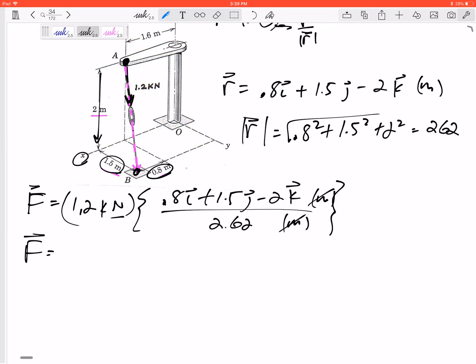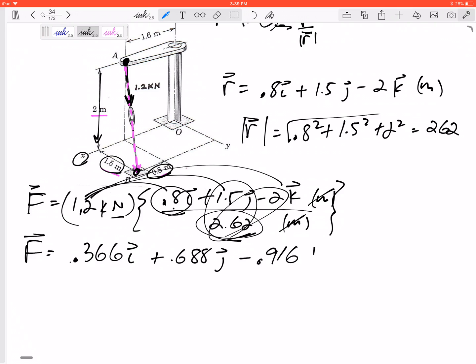So here this force would be 1.2 times 0.8 over 2.62, which is 0.366 in the i. Then here, this times 1.5 over 2.62 would be plus 0.688 in the j. And then this right here, 1.2 times 2 over 2.62, and there was a negative there, so minus 0.916 in the k. That has units of kilonewtons.